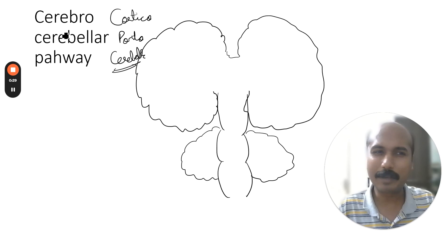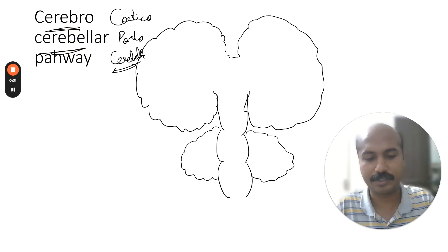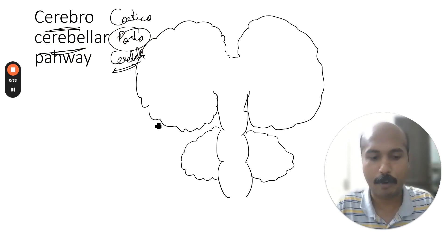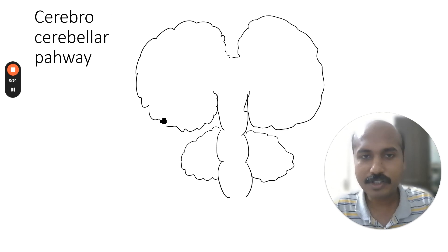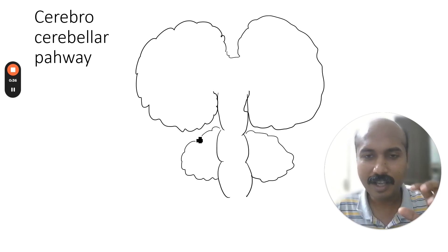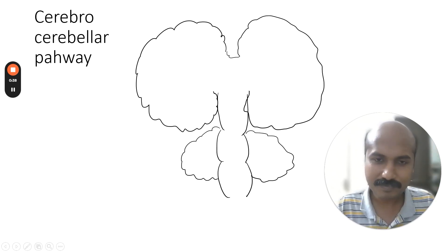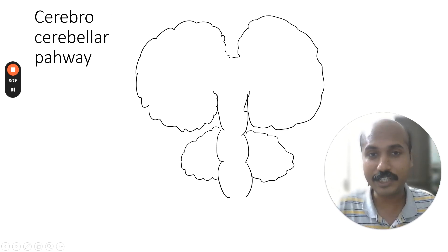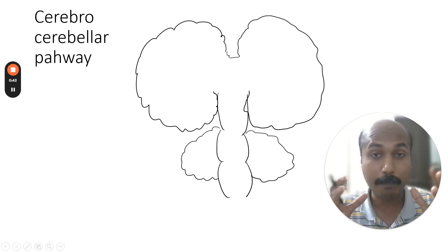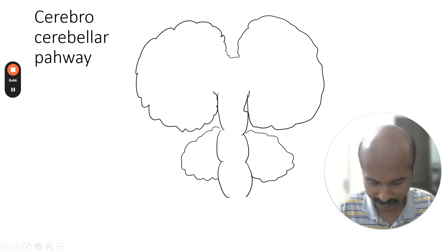The reason is that the cerebrum is not directly connected to the cerebellum — it is always going through the pons. So let us have a look at this picture. This is an outline that I will repeatedly use when I talk about cerebral or brain circuits.